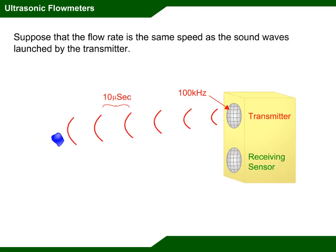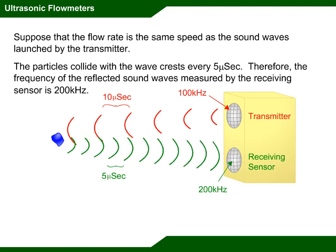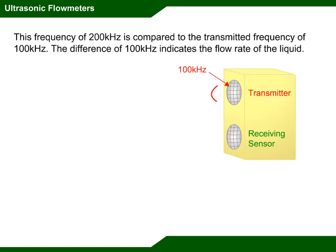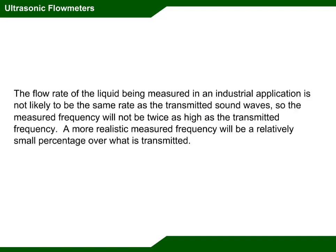Suppose that the flow rate is the same speed as the sound waves launched by the transmitter. The particles collide with the wave crests every 5 microseconds; therefore, the frequency of the reflected sound waves measured by the receiving sensor is 200 kilohertz. This frequency of 200 kilohertz is compared to the transmitted frequency of 100 kilohertz. The difference of 100 kilohertz indicates the flow rate of the liquid. In a realistic industrial application, the measured frequency will be a relatively small percentage over what is transmitted.